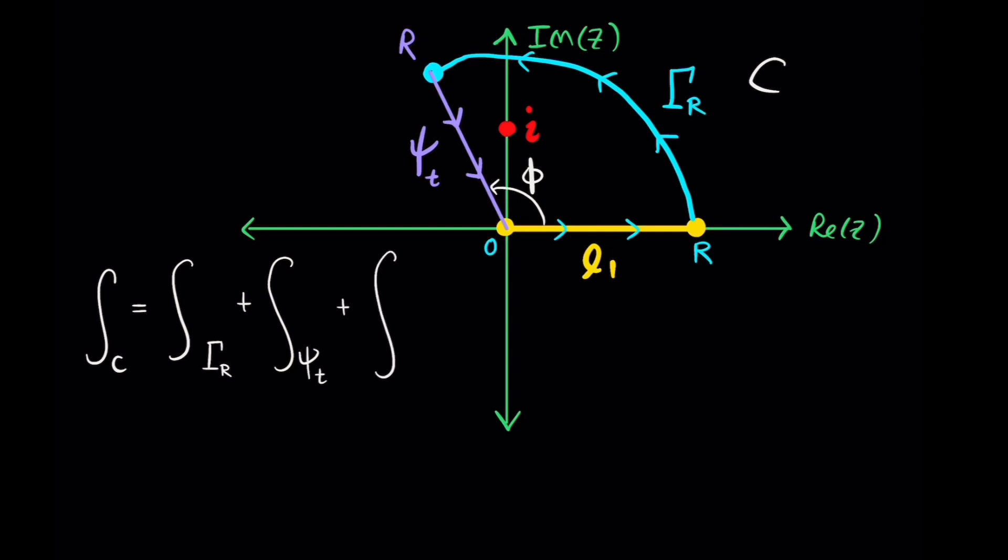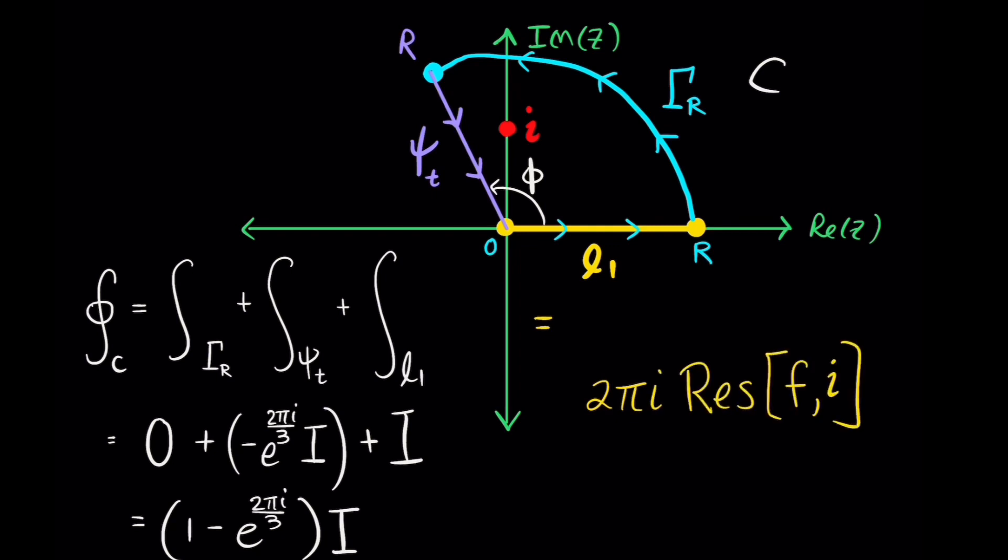So, our complete contour c consists of the line integrals along gamma, psi, and L1. And now, plugging in the values that we found here, we see that we can do a nice little job of factoring out the original integral i that we're looking to calculate. And so, now, we have a constant times that multiple of i, and that's going to serve us well. Now, all we have to do is find 2 pi i times the residue of this function evaluated at our pole i.